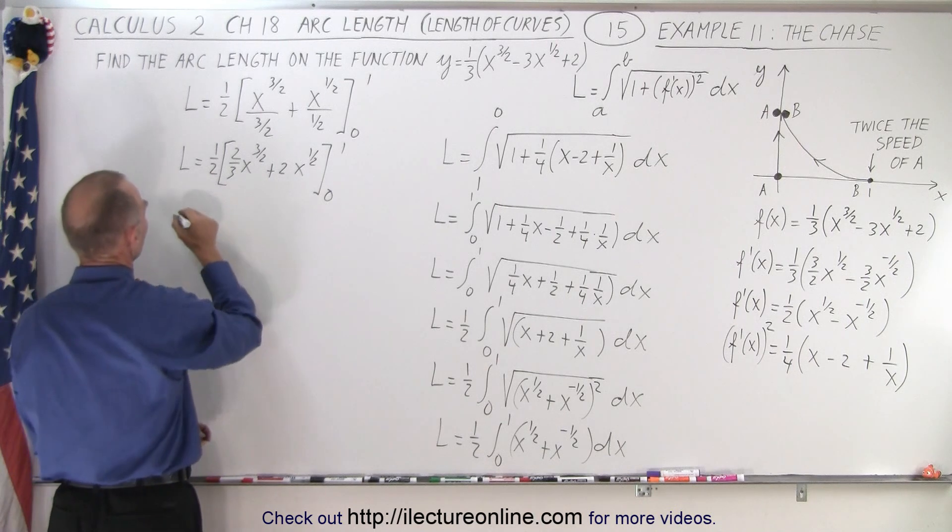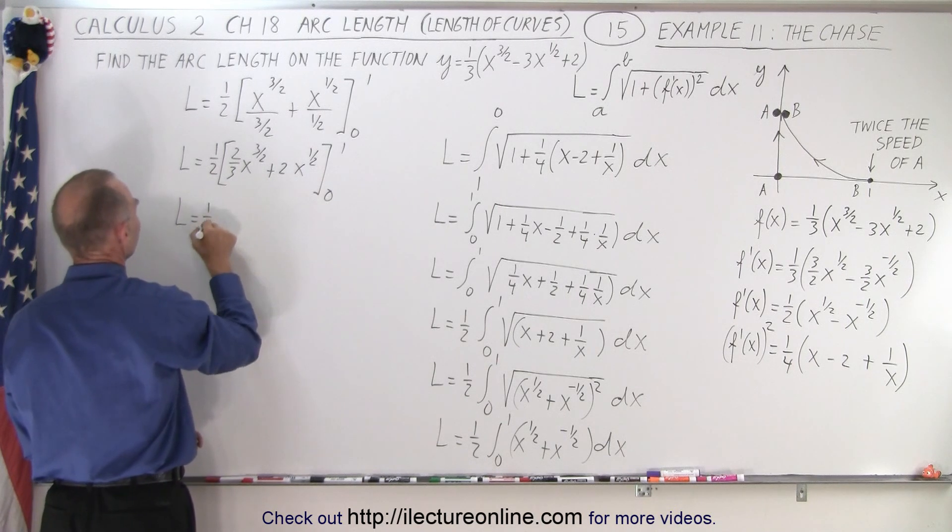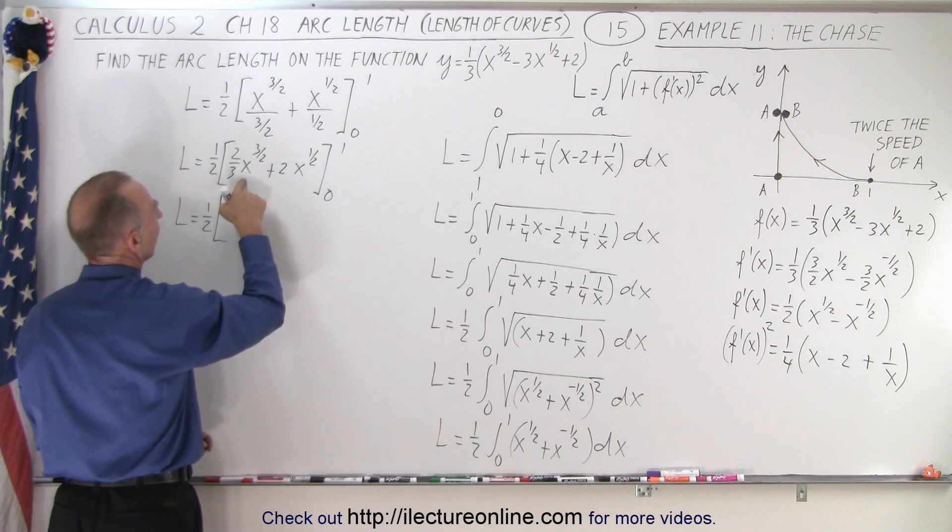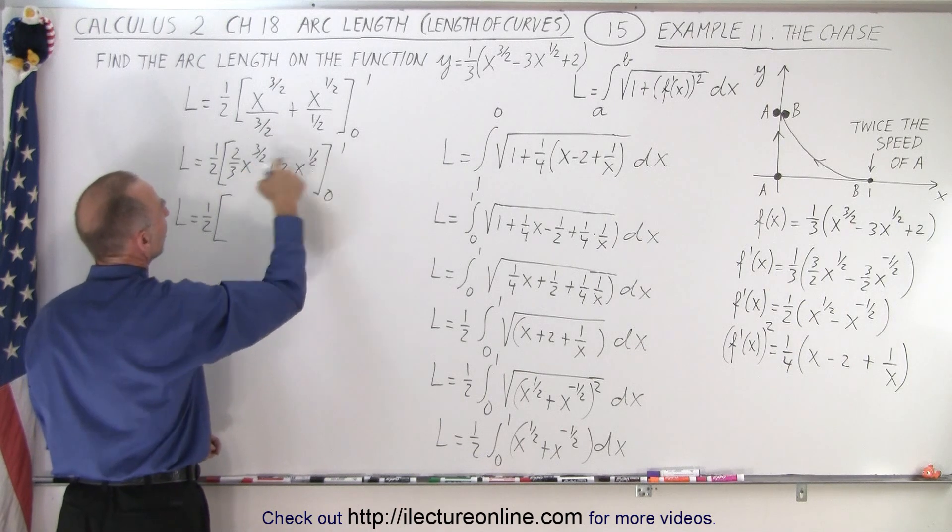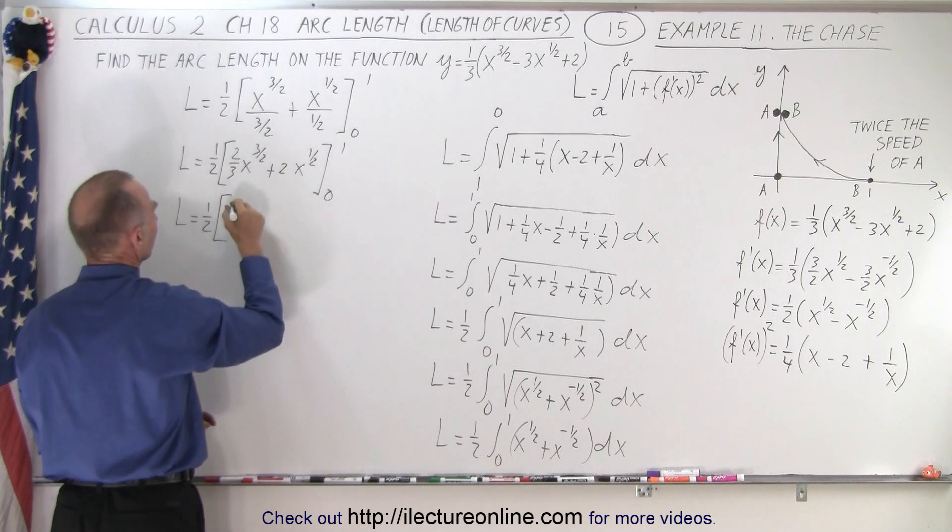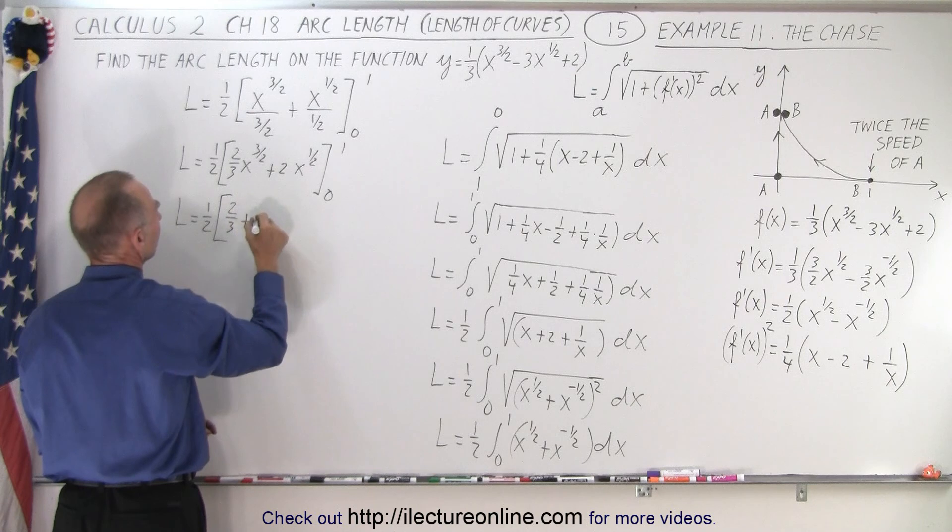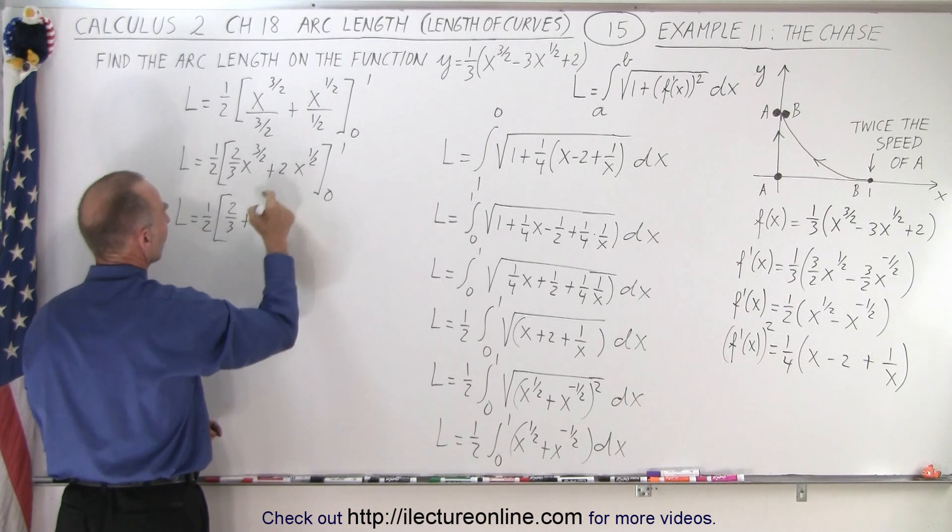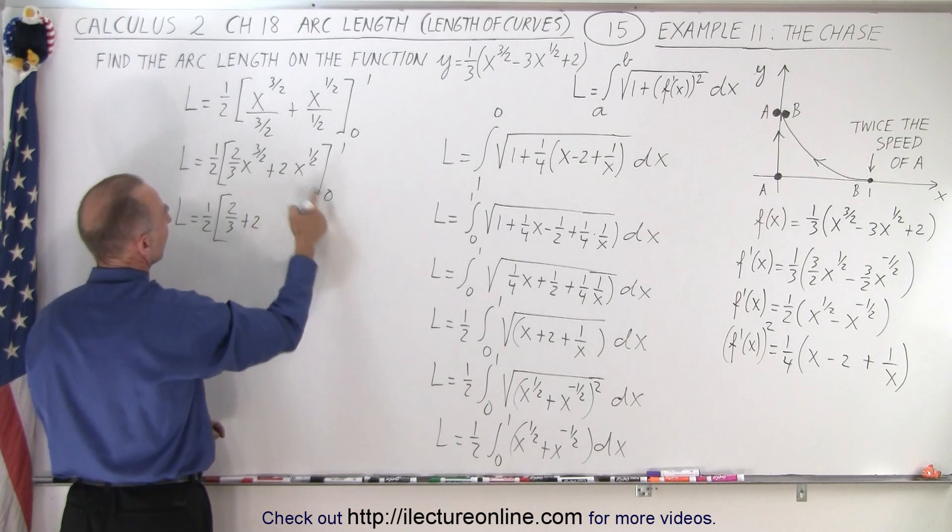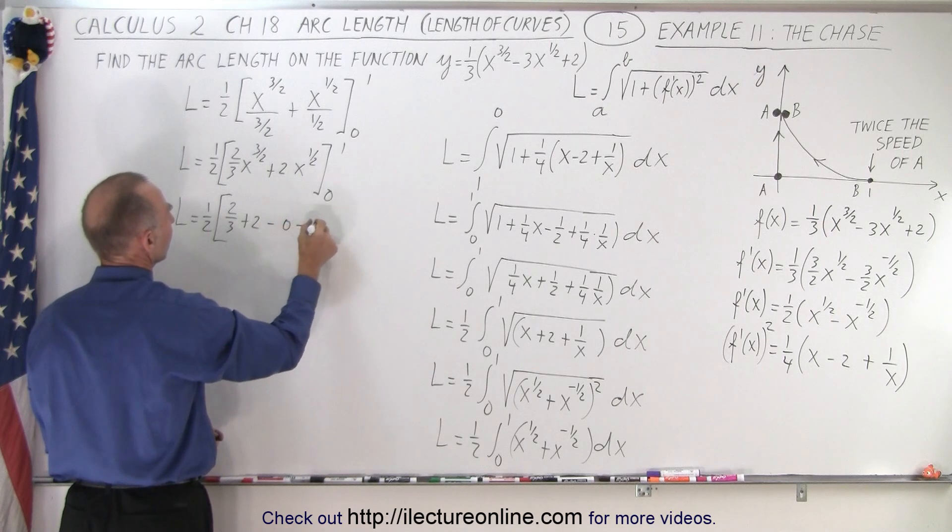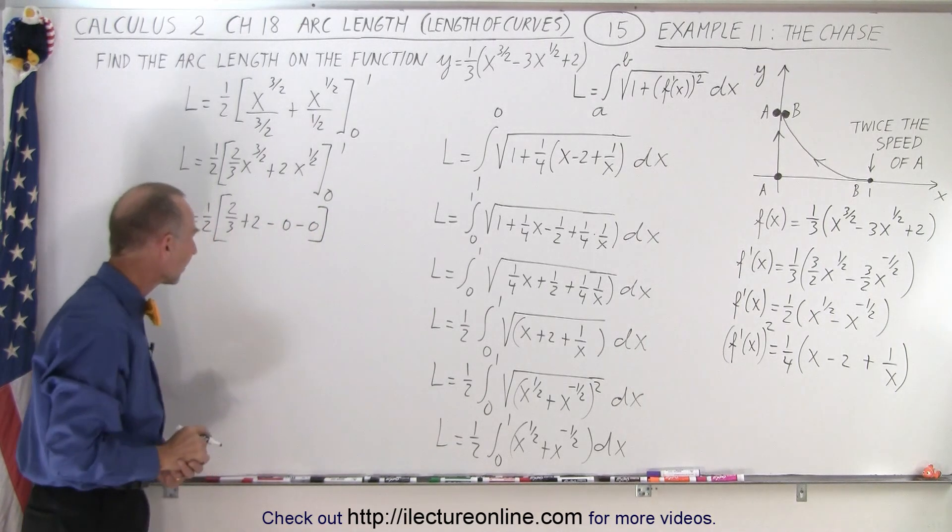Now we plug in the upper limit. We have L is equal to one-half times x to the three-halves, well, when it's one, one to the three-halves is one times two-thirds. So we get two-thirds plus one, the square root of one is one, so plus two, and then we plug in zeros, so minus zero, minus zero. We don't have to worry about that.